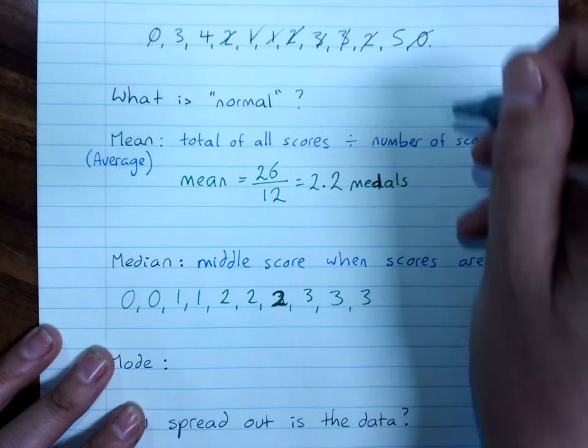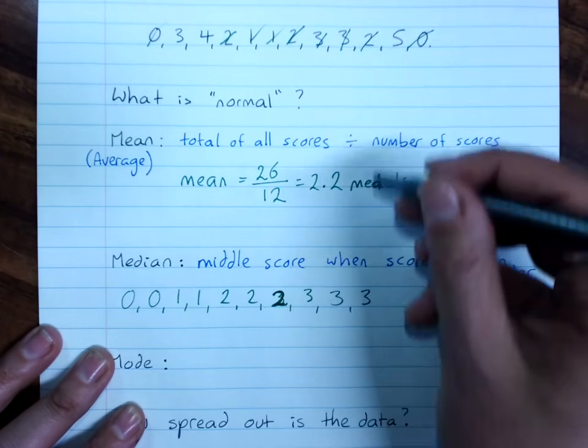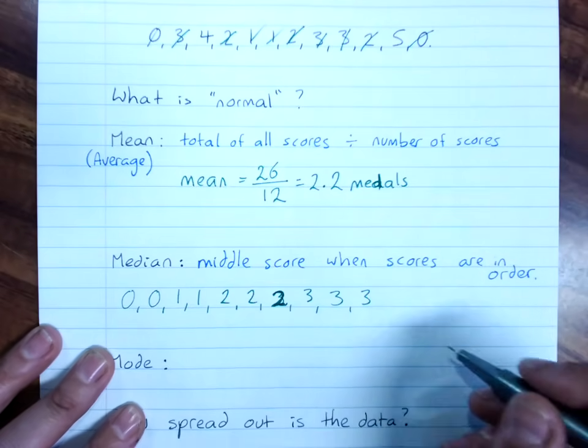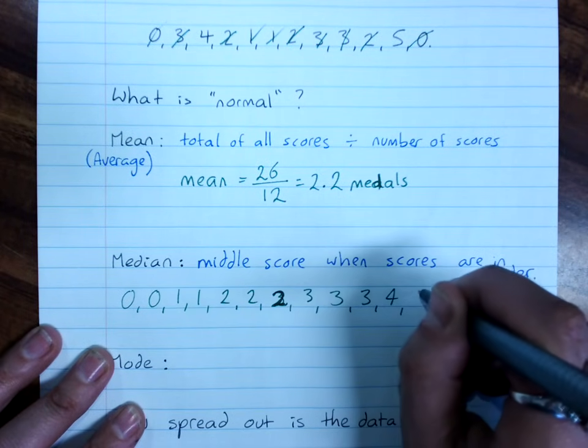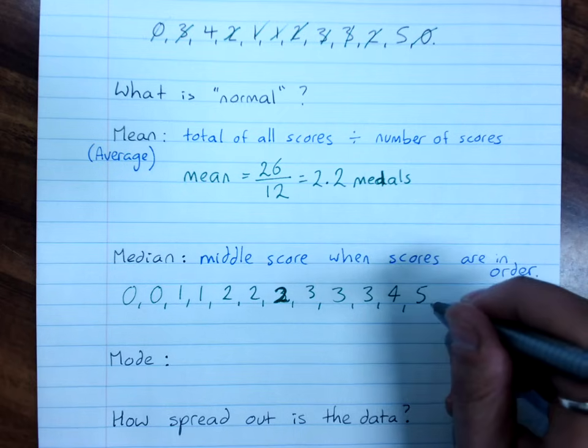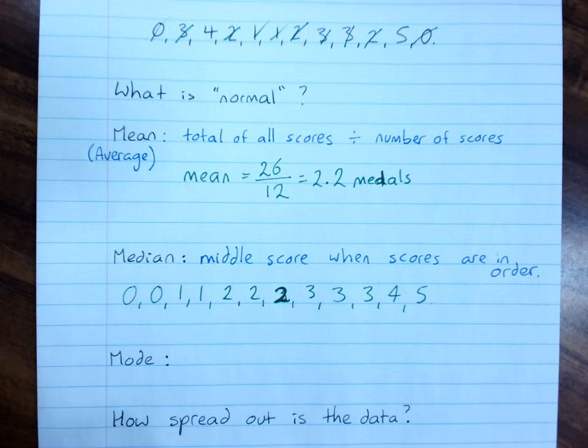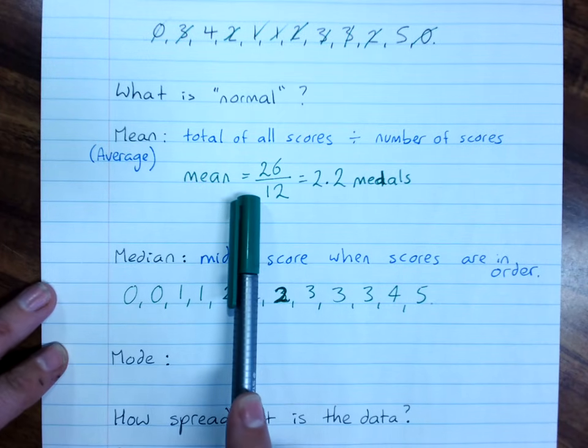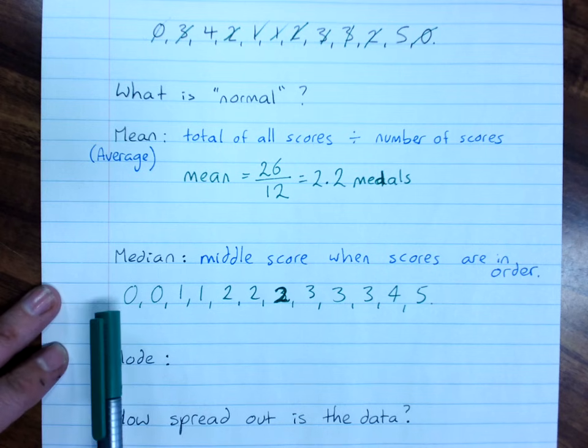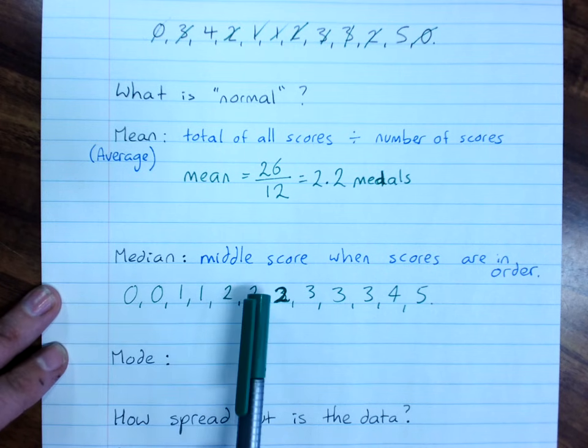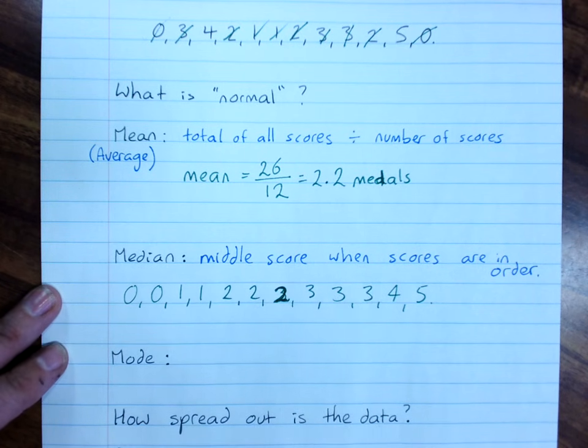3 people got 3, and a 4, and a 5. Now it's a really good idea to check. I know there should be 12 scores. Double check that you've got 12. Yes, we do.